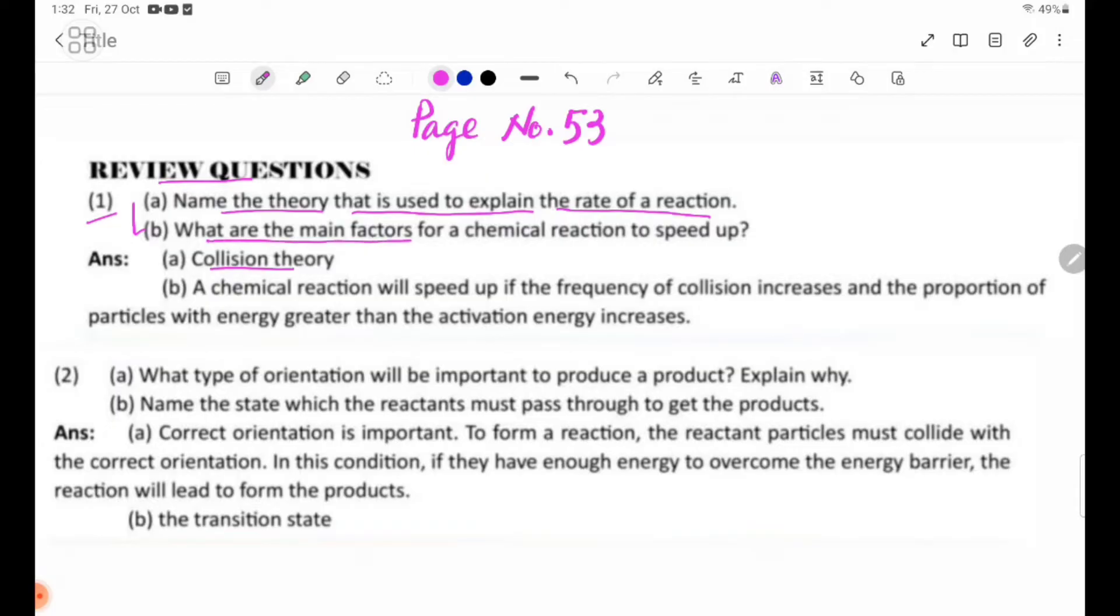What are the main factors for a chemical reaction to speed up? A chemical reaction will speed up if the frequency of collision increases and the proportion of particles with energy greater than the activation energy increases.